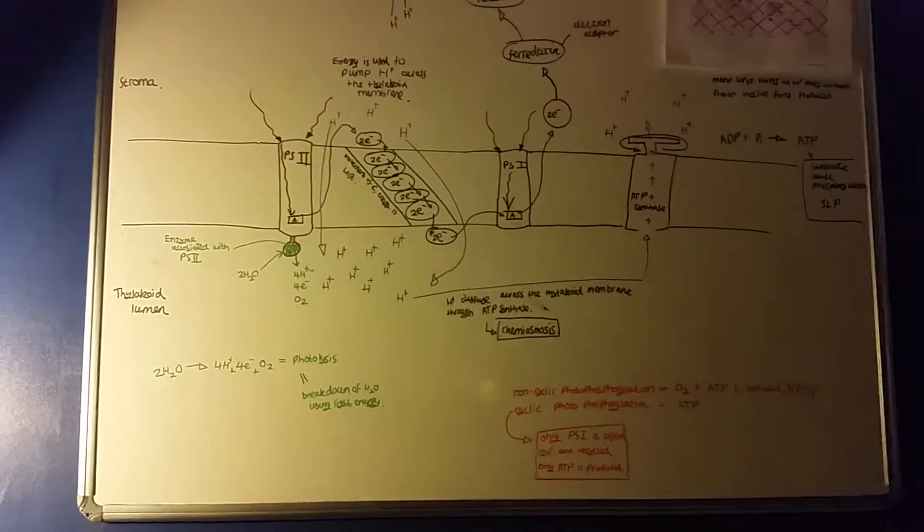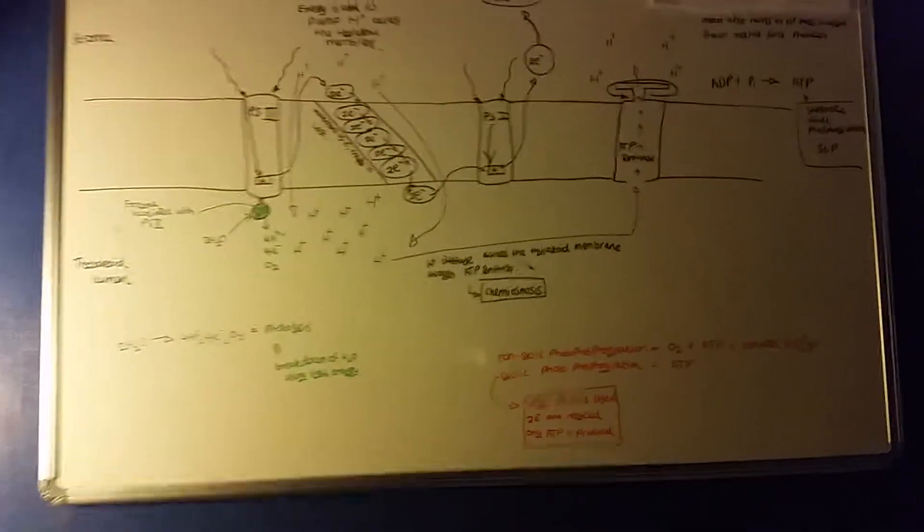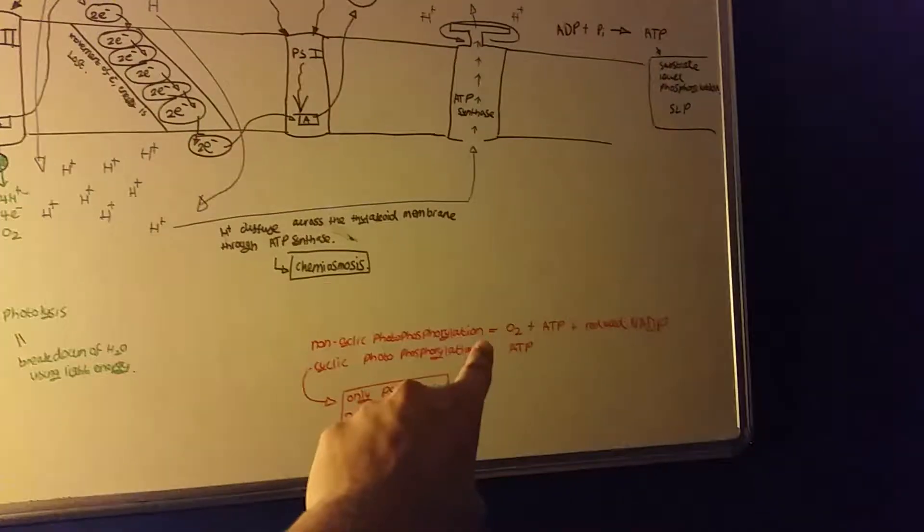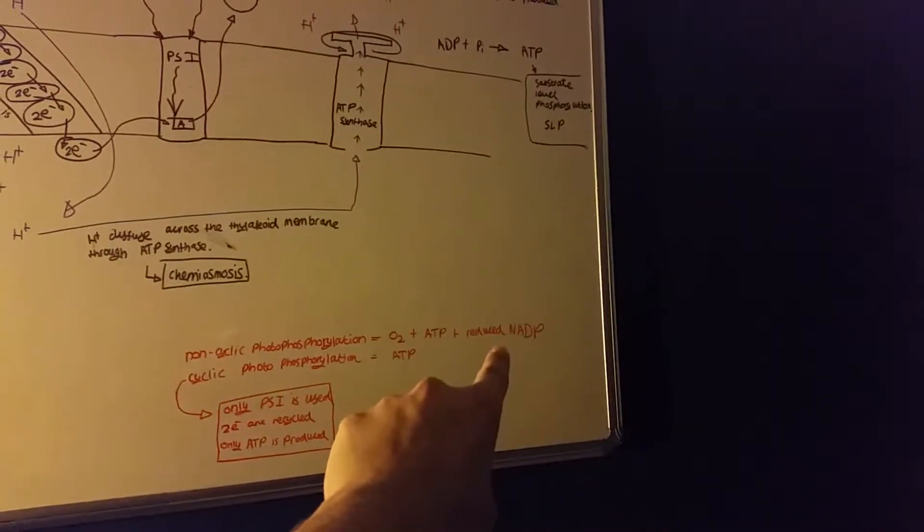All of this is non-cyclic photophosphorylation. The products are an oxygen molecule, an ATP, and a reduced NADP molecule.